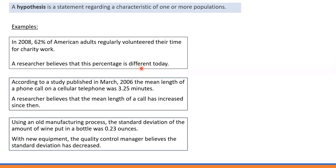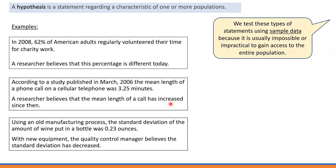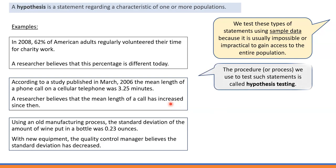We're going to use samples to test those claims. We can use samples to test whether the percentage of American adults that regularly volunteer their time for charity work is different, or whether the mean length of a call has increased since 2006, and so on. We test these types of statements using sample data because it's usually impossible or impractical to gain access to the entire population. The procedure we use to test such statements is called hypothesis testing.